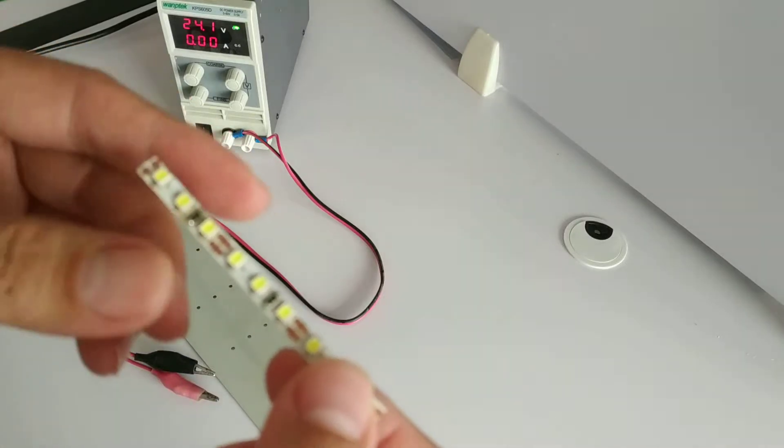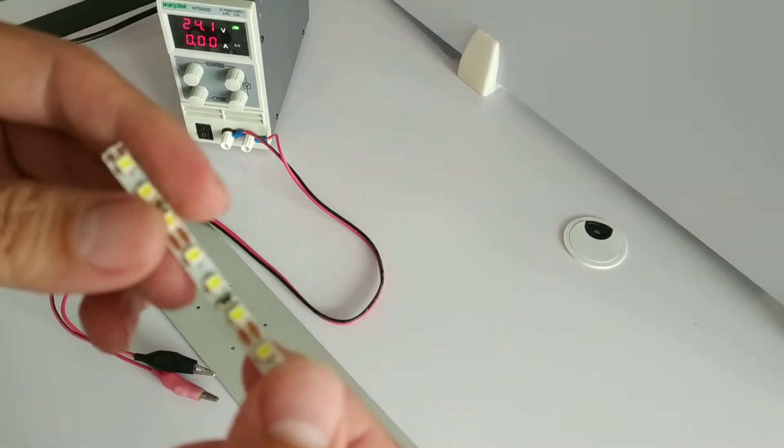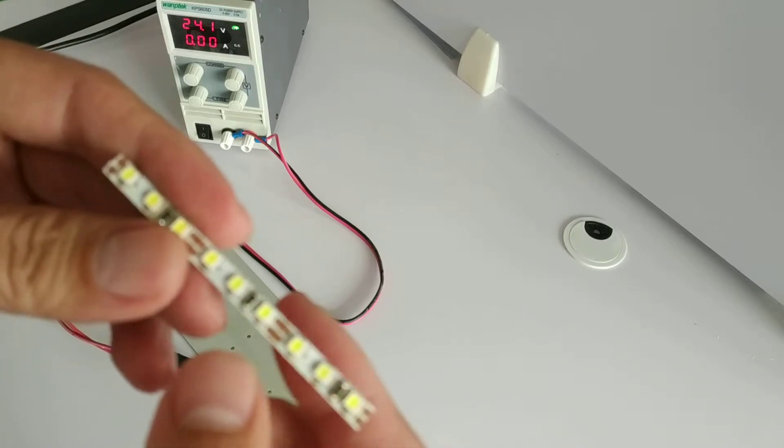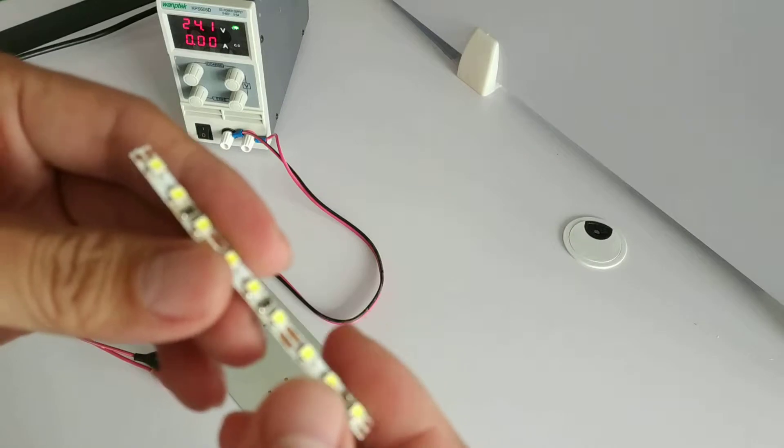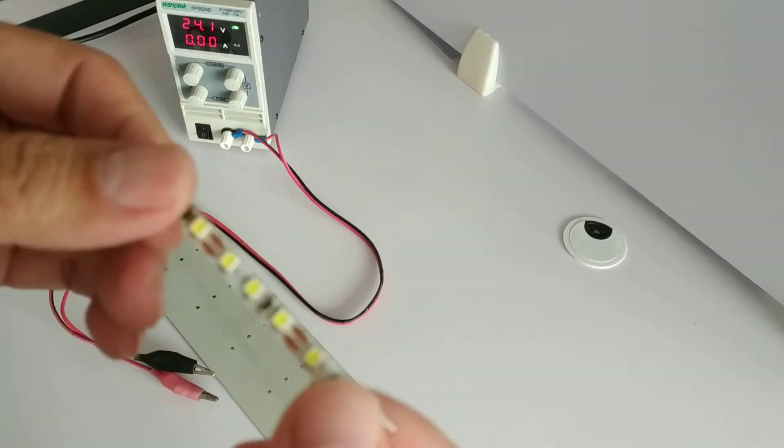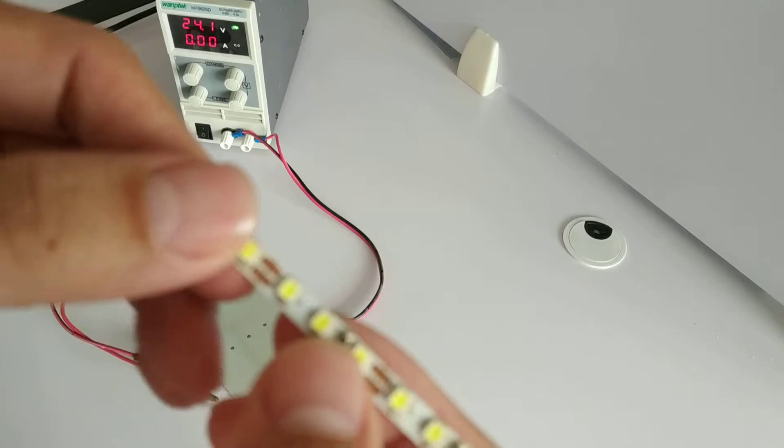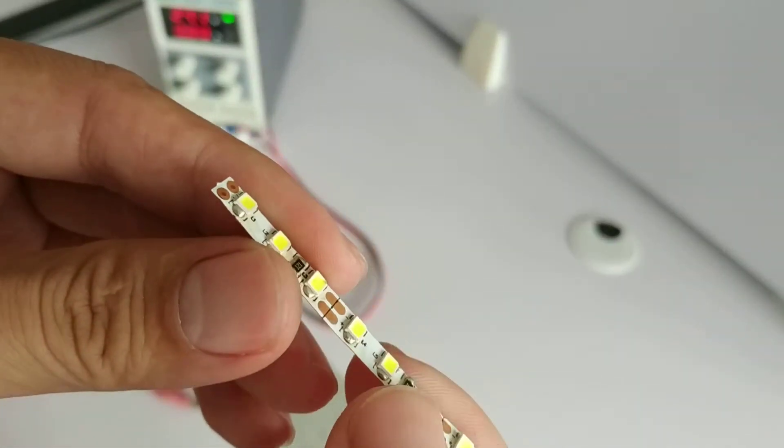Sometimes when the worker installs the LED strip line, they may make a mistake and ignore the input voltage. Just like this, this is DC 12, 3 LED per unit.